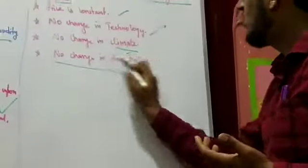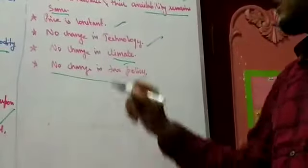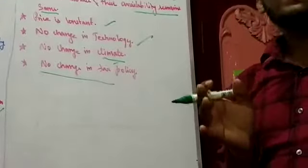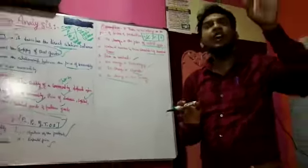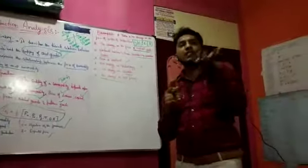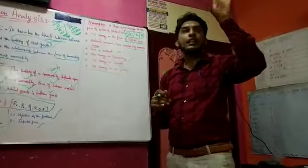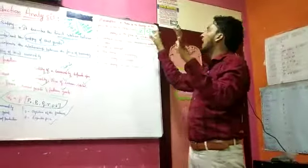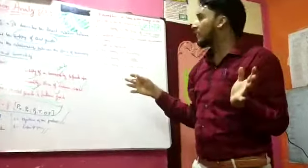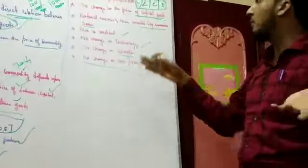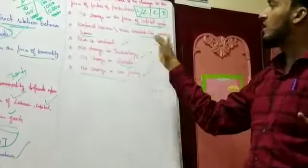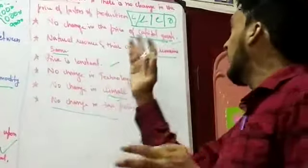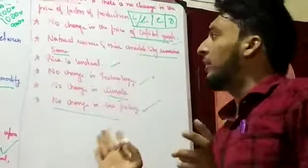And at last, no change in the tax policy. There is no change in the tax policy — the tax policy is fixed by the government of India and will remain the same. So the assumptions are: no change in factors of production, no change in the price of capital goods, no change in technology, climate, and tax policy, and natural resources and their availability remains constant.